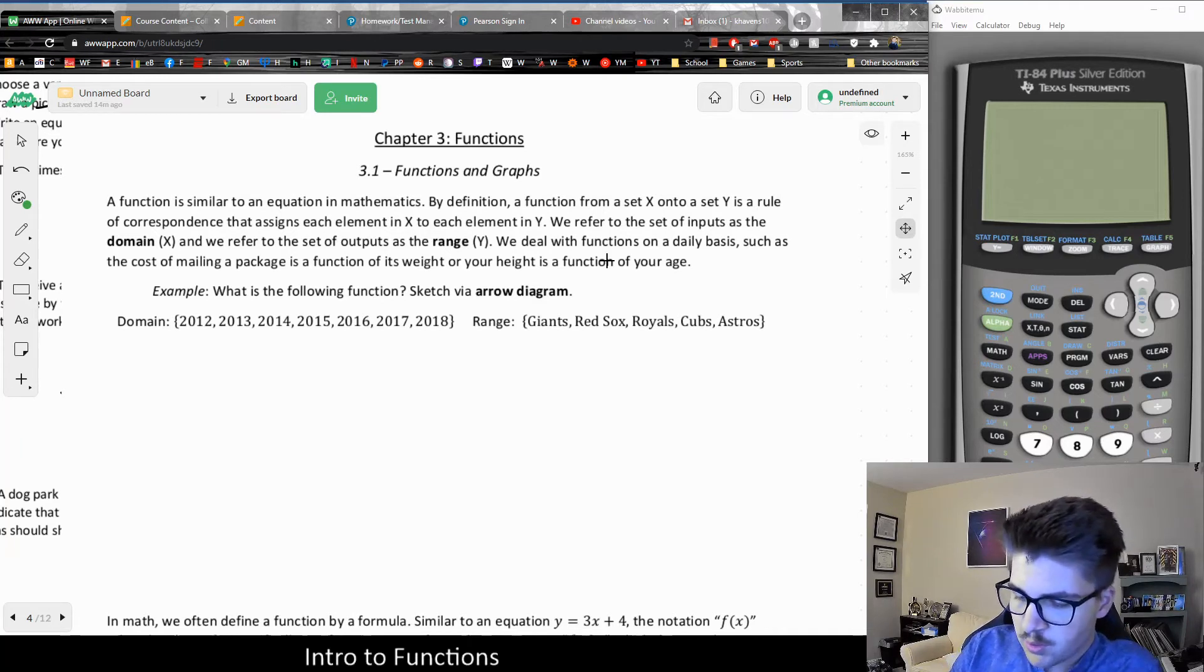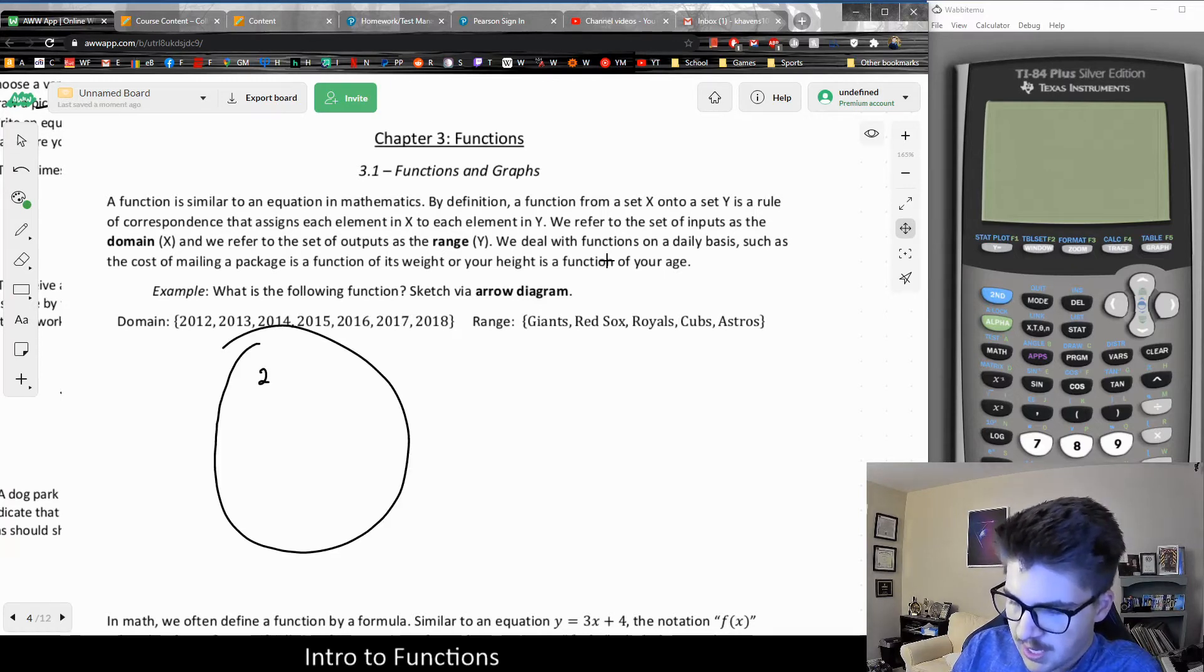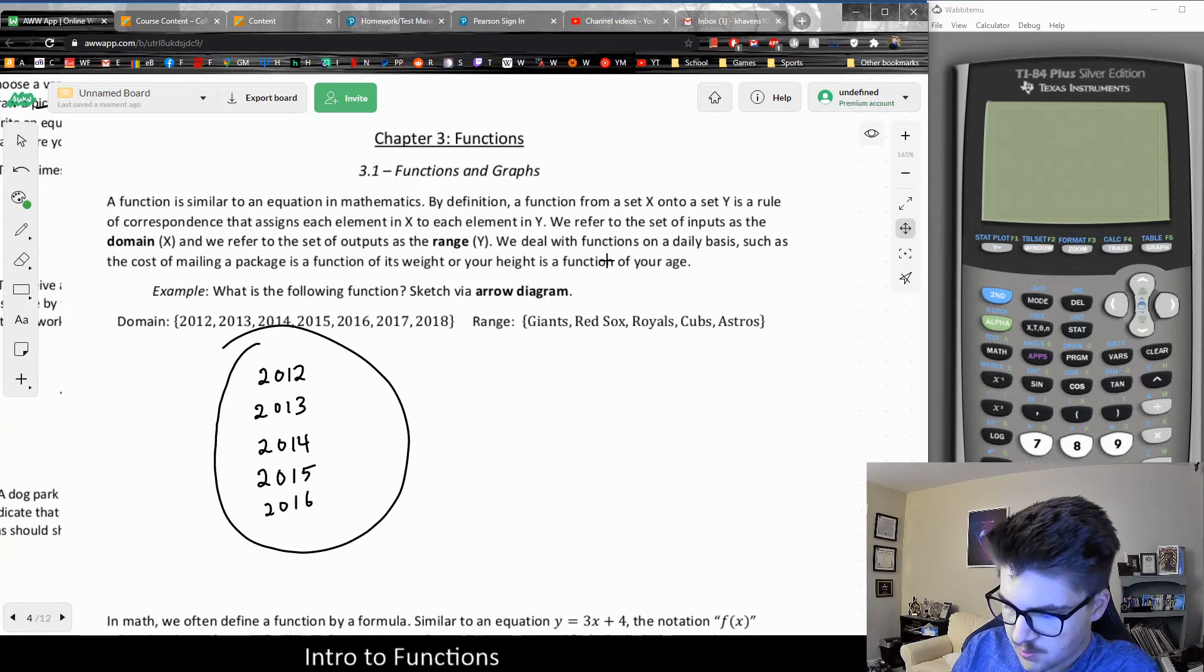Sometimes we use what we call an arrow diagram to illustrate the correspondence. We typically don't do this with mathematical functions. But basically, the domain is the set of inputs. In this case, we're given these values, 2018.